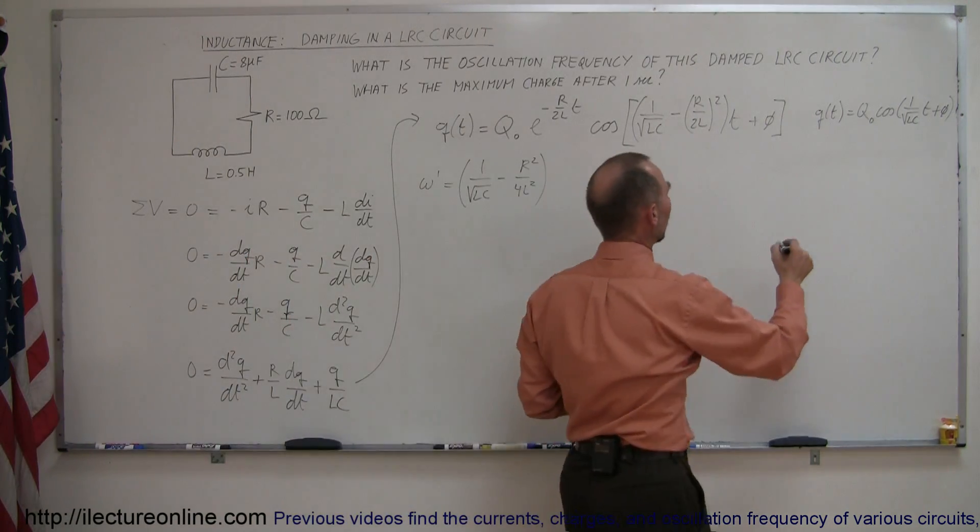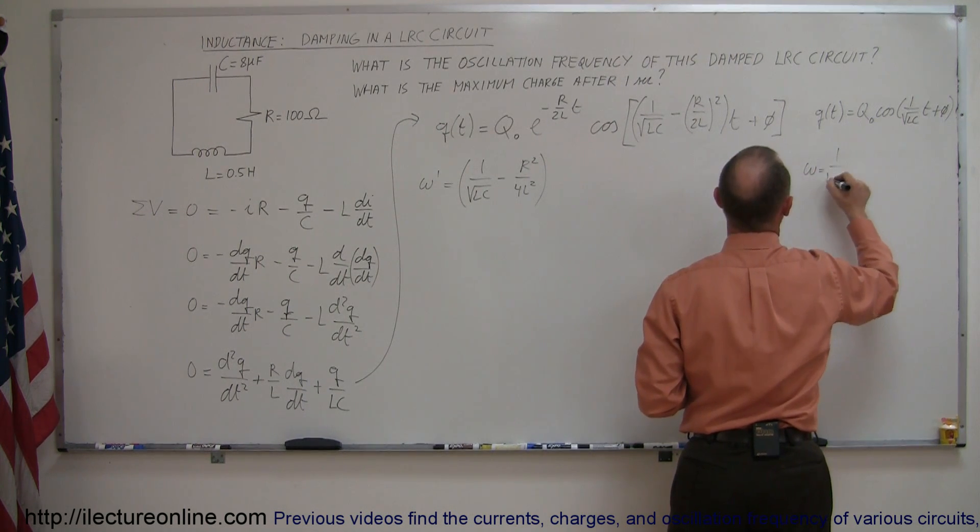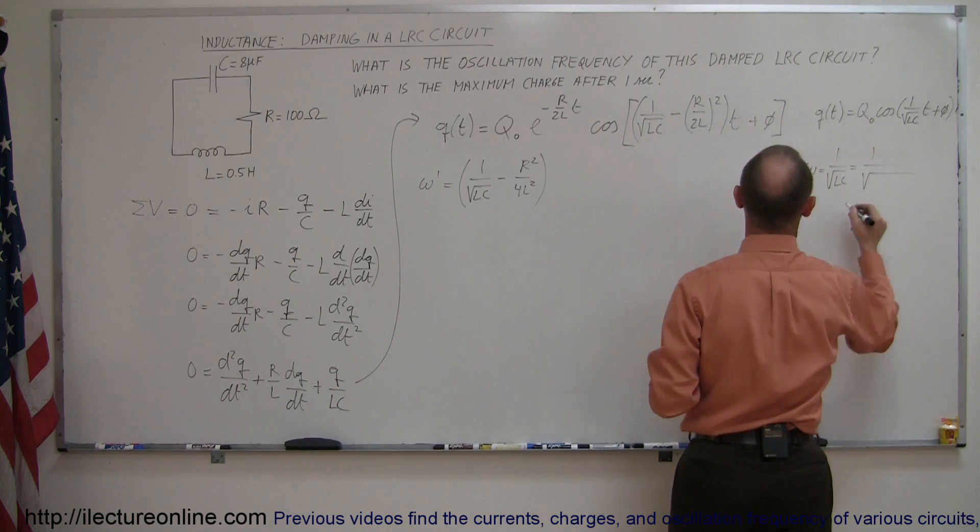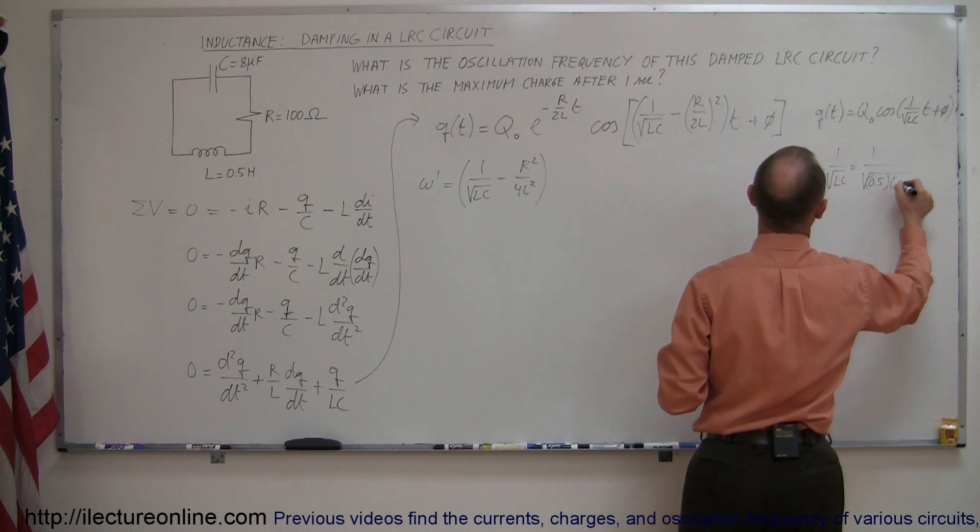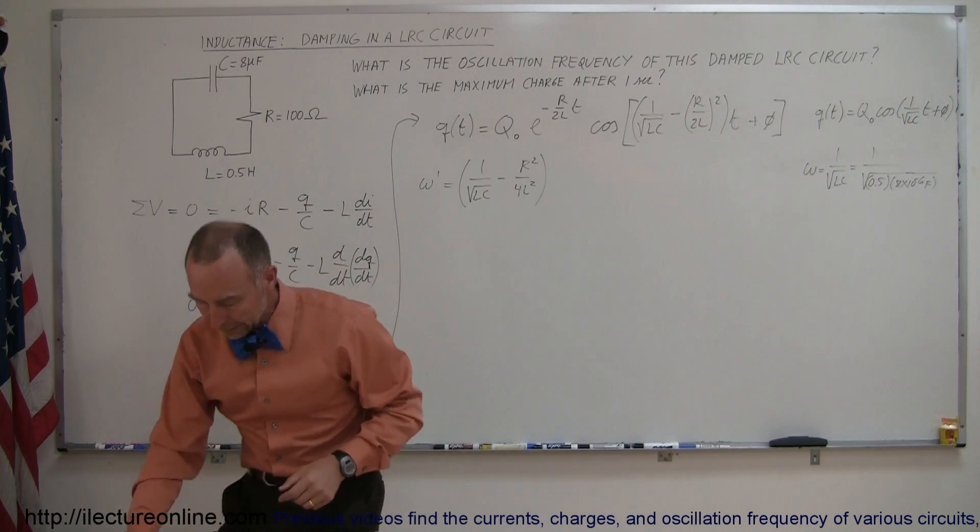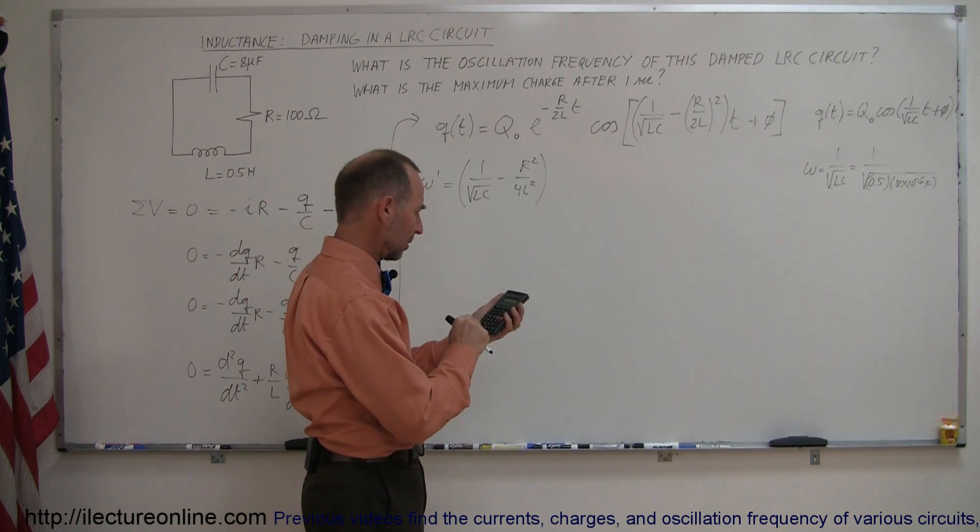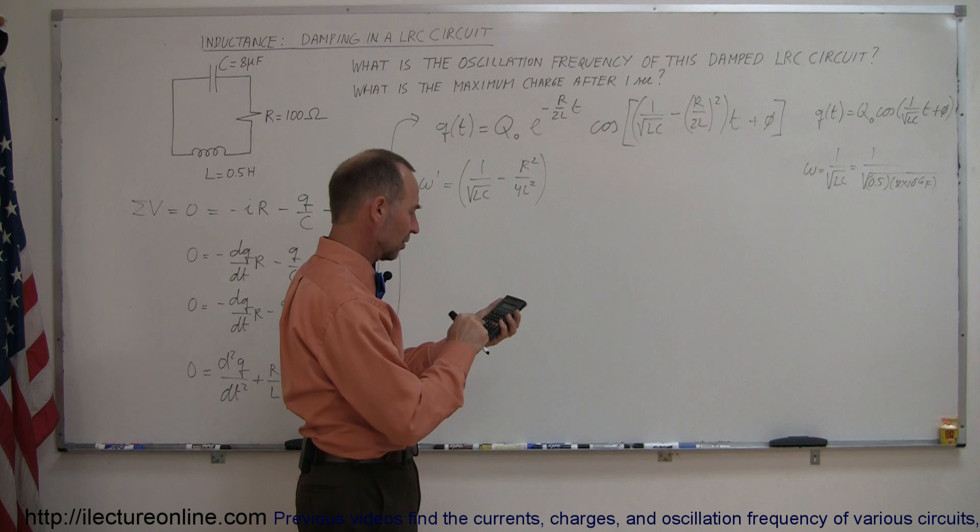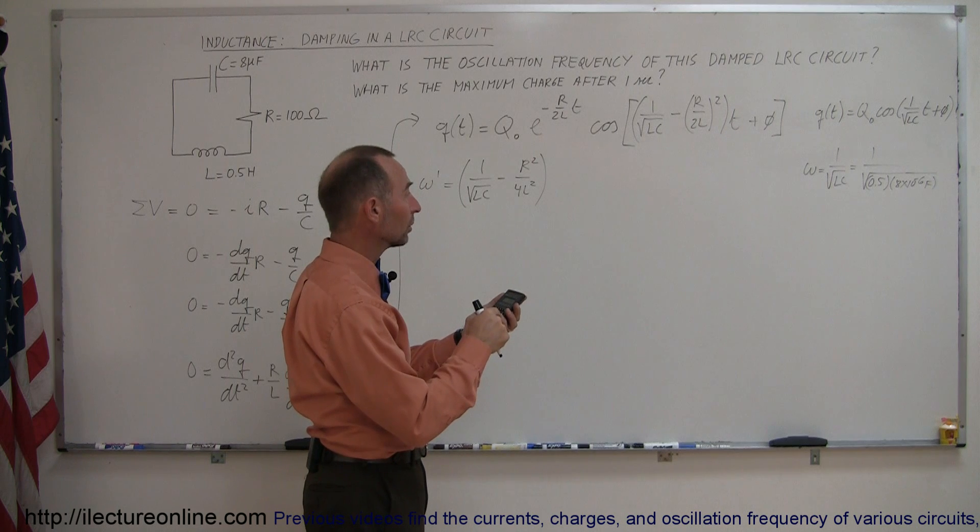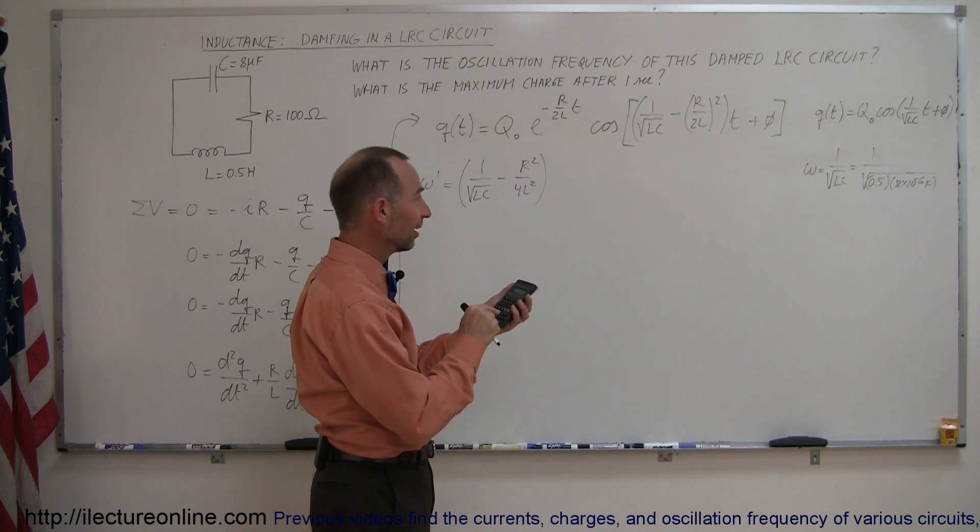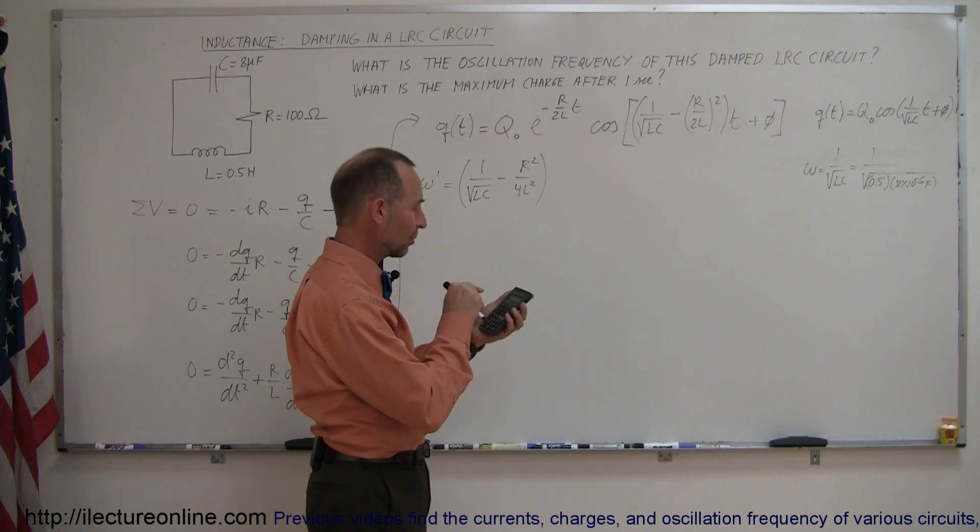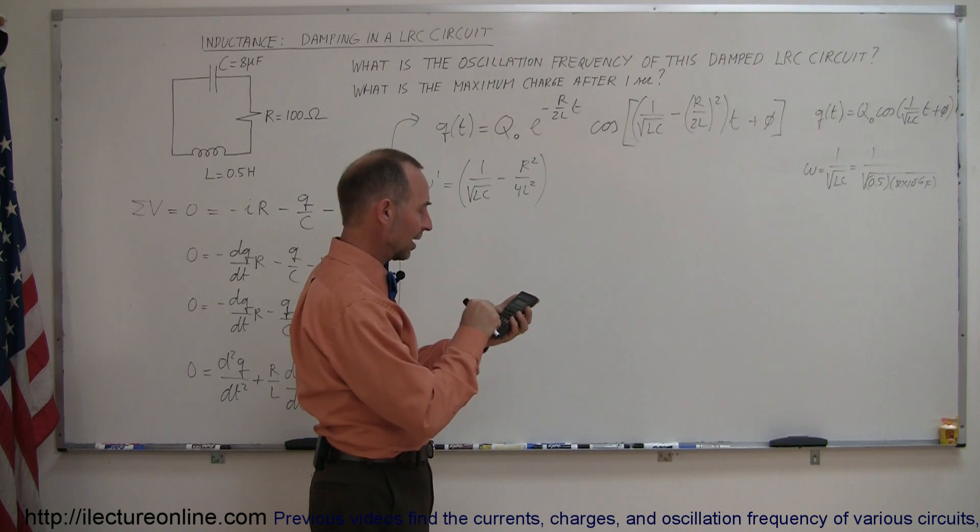Let's first again find out what our old ω was so ω which is equal to 1 over the square root of L times C is equal to 1 over the square root of L which was 0.5 henrys times C which was 8 times 10^-6 farads. And if I remember right what that was let's quickly figure it out. 0.5 times 8 e -6 equals, take the square root of that. That didn't come out right. Let me try again. 0.5 times 8 e -6 equals, take the square root and then take the inverse of that. And indeed it is 500.